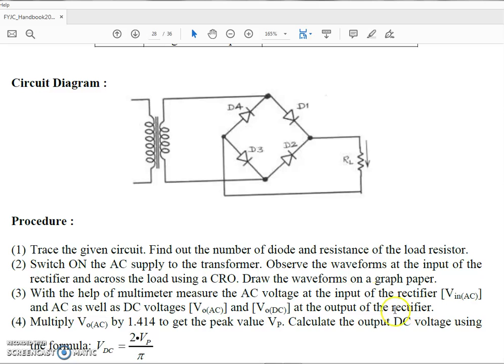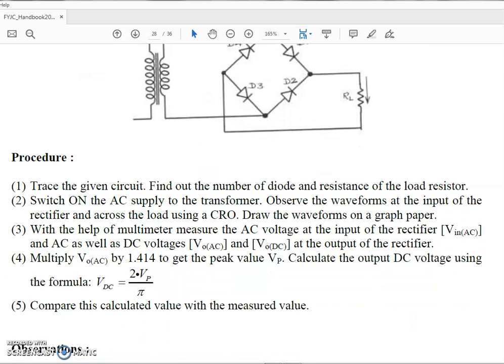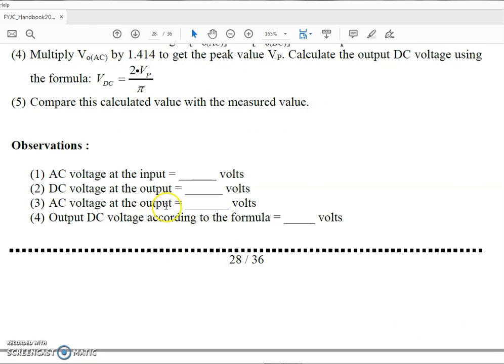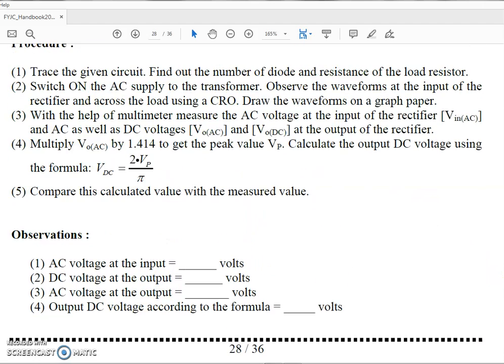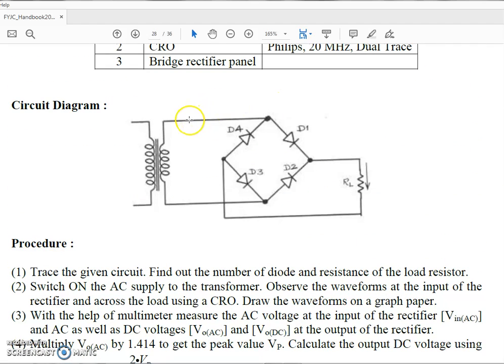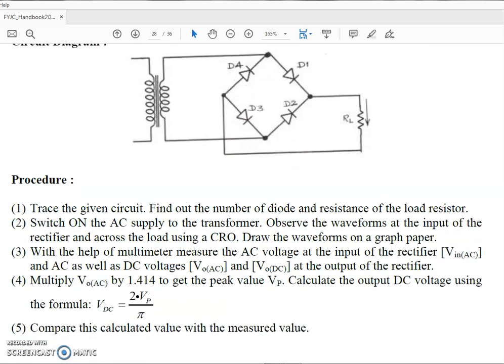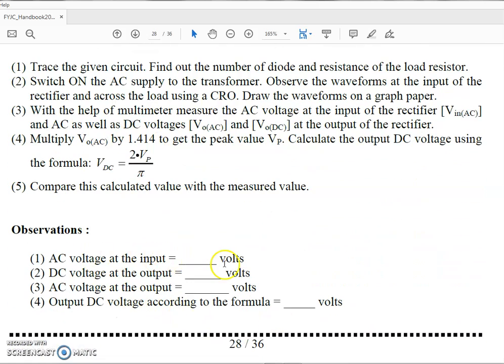Then you are going to measure the AC input using a multimeter. AC voltage at the input and that will be nothing but the voltage between the two terminals of the secondary, between this terminal and this terminal. You have to measure and that you have to record here AC voltage at the input.